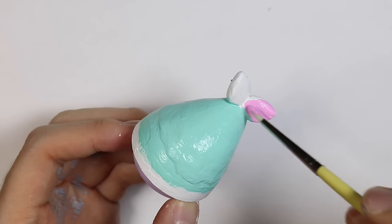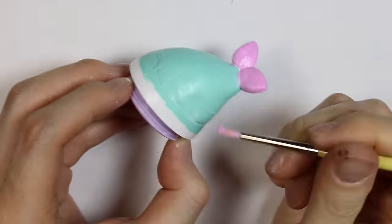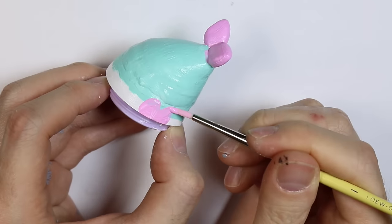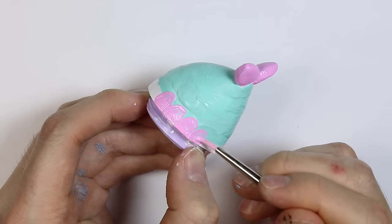Next I'm painting on the fins pink and then the rim of the tail pink as well. I'm going to paint on the rest of the scaly details.